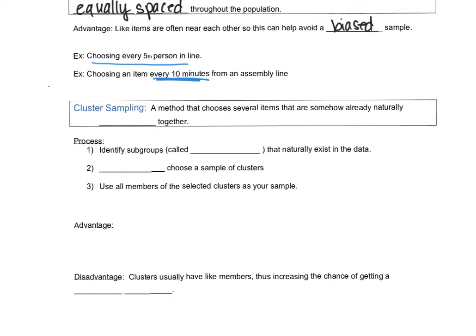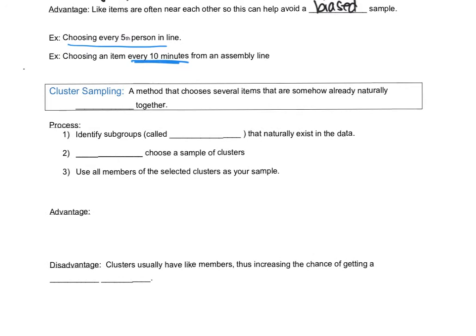Now I have a couple more good methods. The next one is called cluster sampling. This is a method that chooses several items that are somehow already naturally grouped together. They're in clusters. Clusters are groups. So let's talk about the process. We find these subgroups, which would be called our cluster. These are like groups within our sample and they kind of already naturally exist. And this is an okay method because once we pick the clusters, we're going to randomly pick those clusters. Every good method will have some sort of element of random. And then we'll just combine our clusters to make a sample.